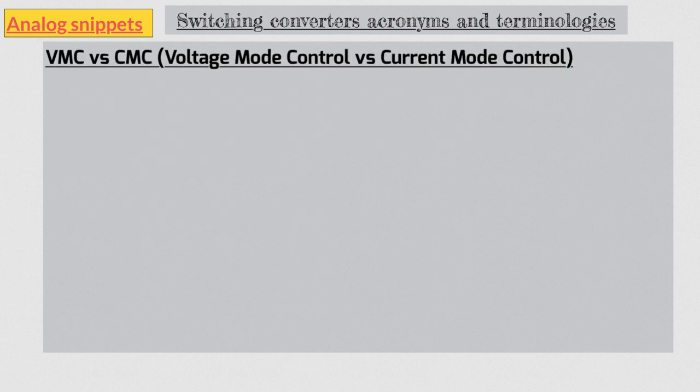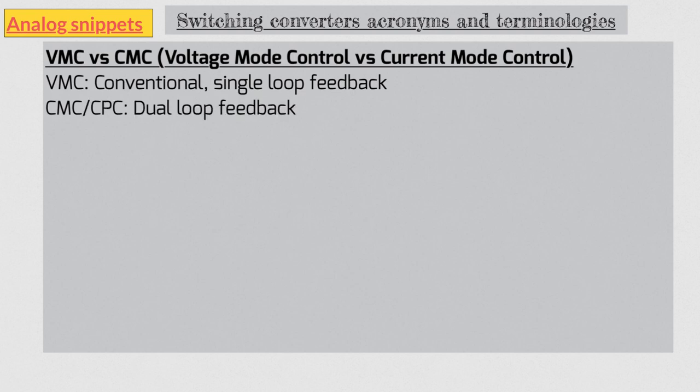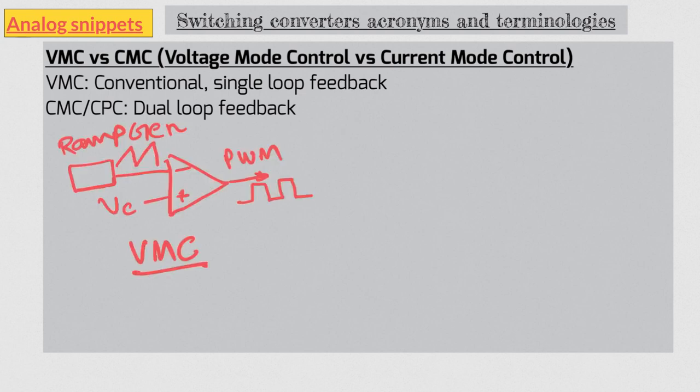Our final acronyms are VMC and CMC. Switching converters almost always contain a negative feedback loop to regulate the voltage. Voltage mode control refers to conventional single loop feedback control. Current mode control or current program control is a dual loop feedback solution. Both contain an error amplifier which generates a control voltage. In voltage mode control this control voltage is compared against a voltage ramp signal. Current mode control does not have a dedicated ramp generator. Rather it makes use of the natural ramp in the inductor current waveform.